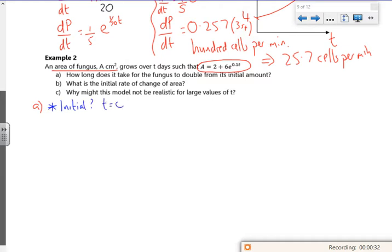So that's t is 0. So A is 2 plus 6, e to the power 0. e to the power 0 is 1, 6 times 1 is 6, 2 plus 6 is 8, and that's centimeter squared.